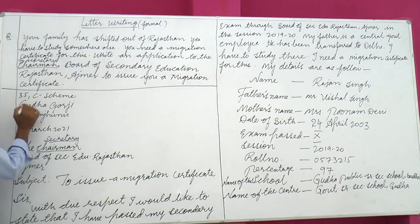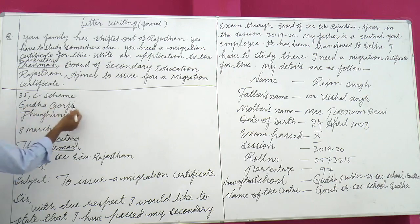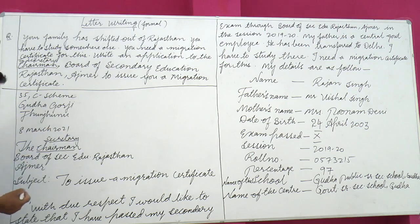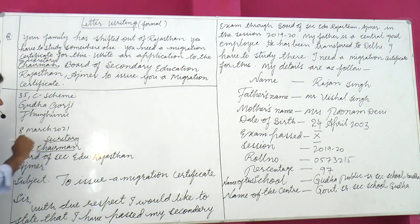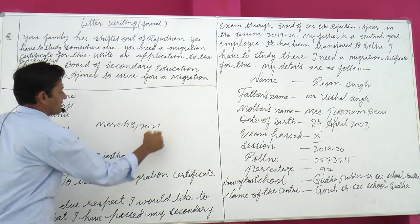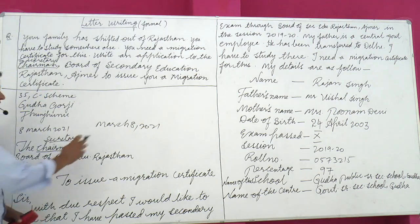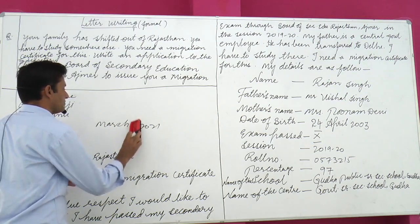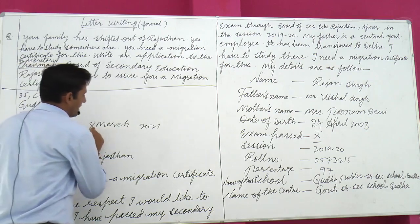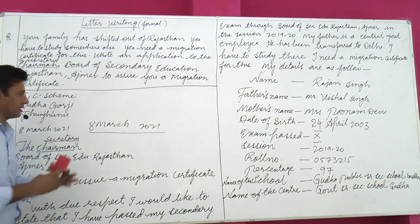First, write your address. The address includes your house number, local area — for example, C Scheme colony name, Gudda Godji, Jhunjhunu. For the date, if your paper is on 8th March, write: 8 March 2021. When writing the date as '8 March 2021,' a comma after March is mandatory. If you write it as a single phrase '8 March 2021,' no comma is needed.